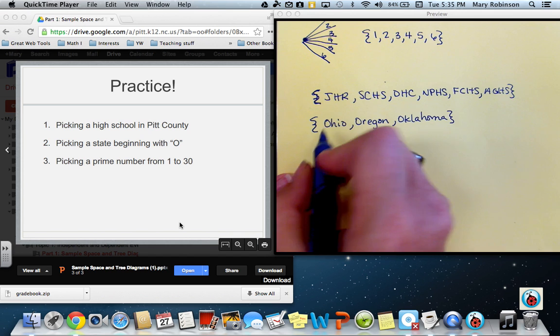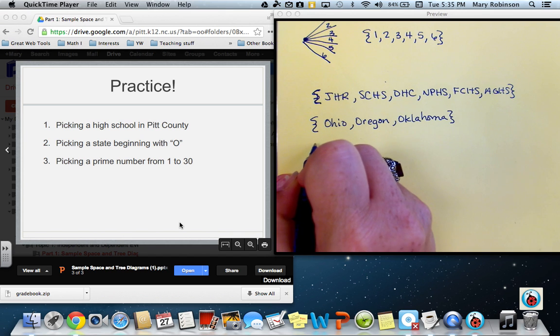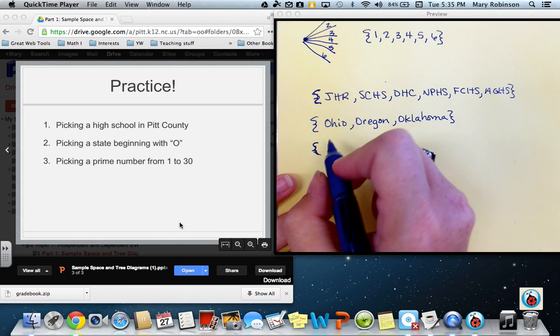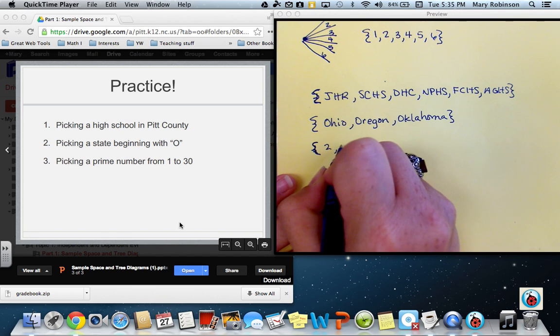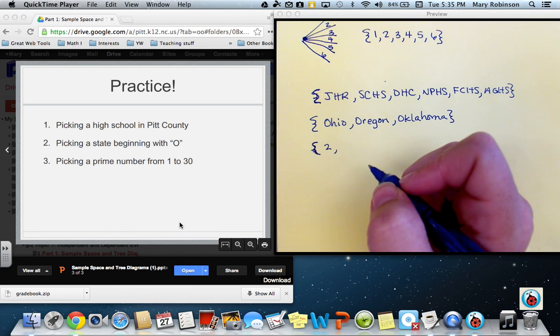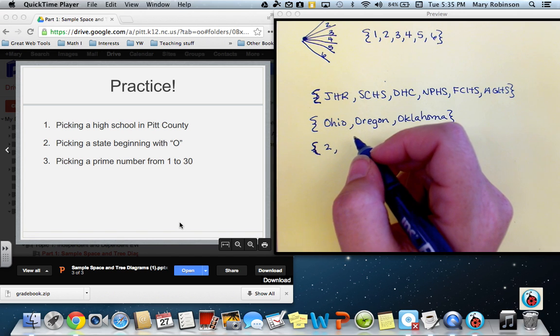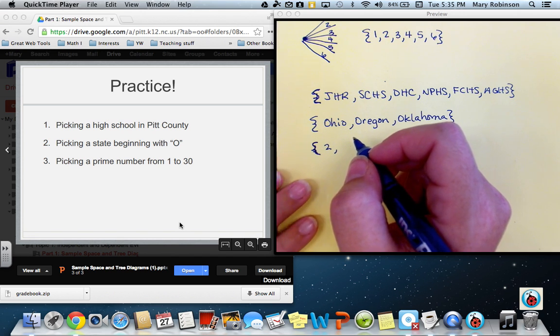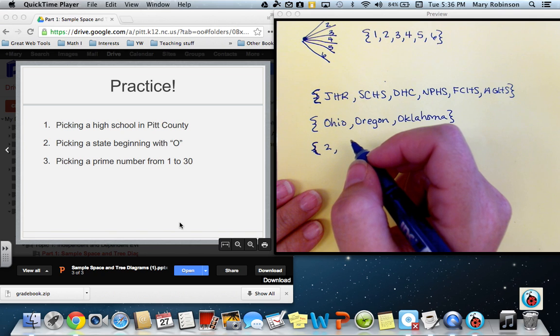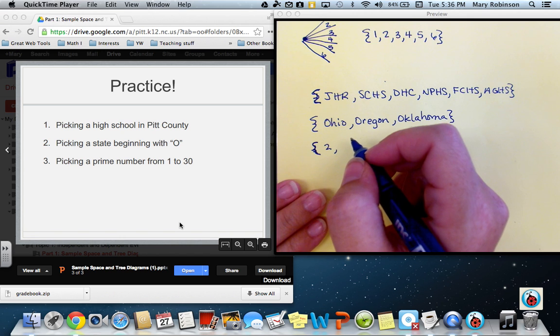Our prime numbers from 1 to 30 contain the sample space starting with 2 because 1 is not a prime number. Remember that a prime number must be made up of two factors, 1 and the number. Since 1 has only one factor, which is 1, it is not prime. Therefore, 2 is the only even and the first prime number.